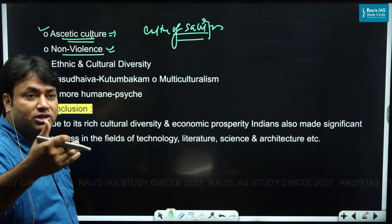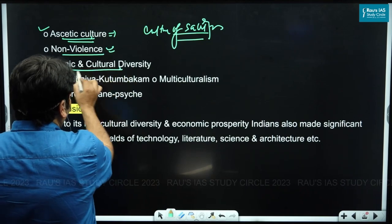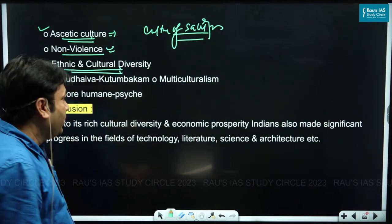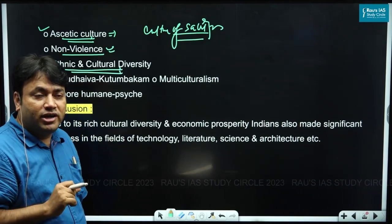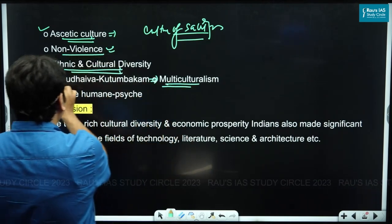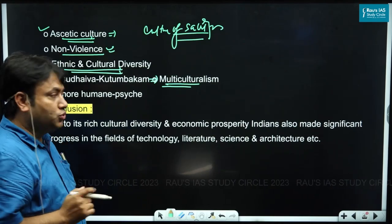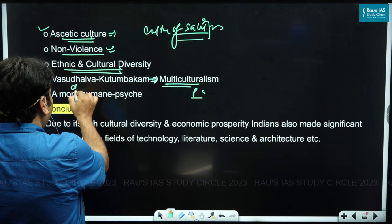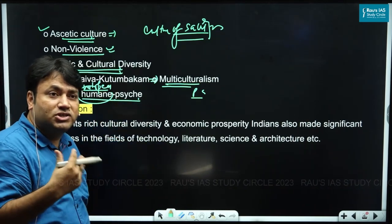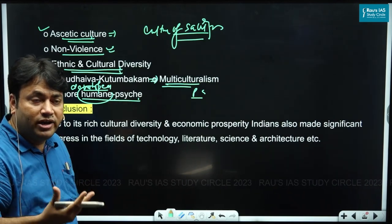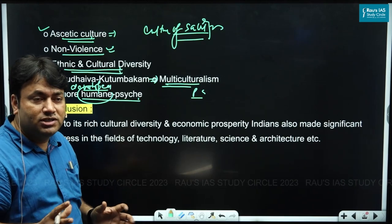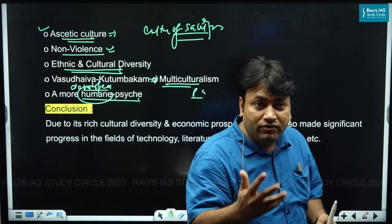New religions preached non-violence, and India always maintained a sense of respect ingrained in its cultural heritage and tradition — respecting a pluralistic society, ethnic and cultural diversity, and the principles of Vasudhaiva Kutumbakam and multiculturalism. As a result, Indians developed a more humane and liberal psyche, and India emerged as a Vishwa Guru. The basic reason behind all this lies in geographical factors.